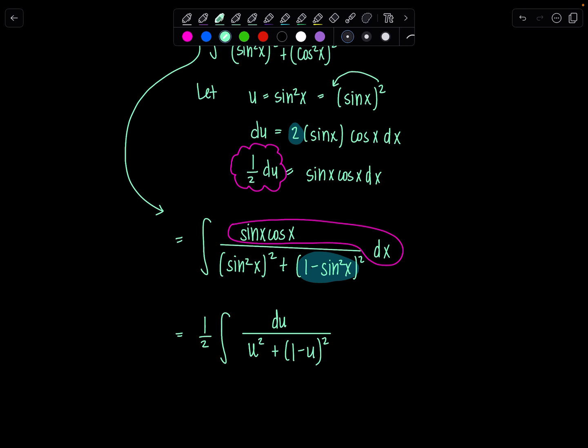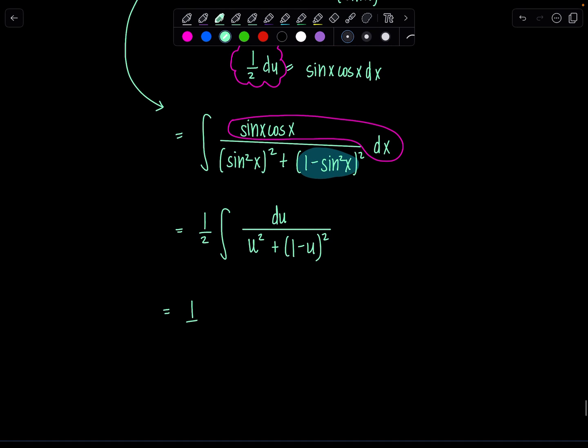Take a second, marinate on it. Are you under control? We're good? Fabulous. Now let's expand, clean up in the denominator, and then see how to proceed. So we've got here 1 half integral du over u squared plus 1 minus 2u plus u squared. This is 1 half integral du over 2u squared minus 2u plus 1.